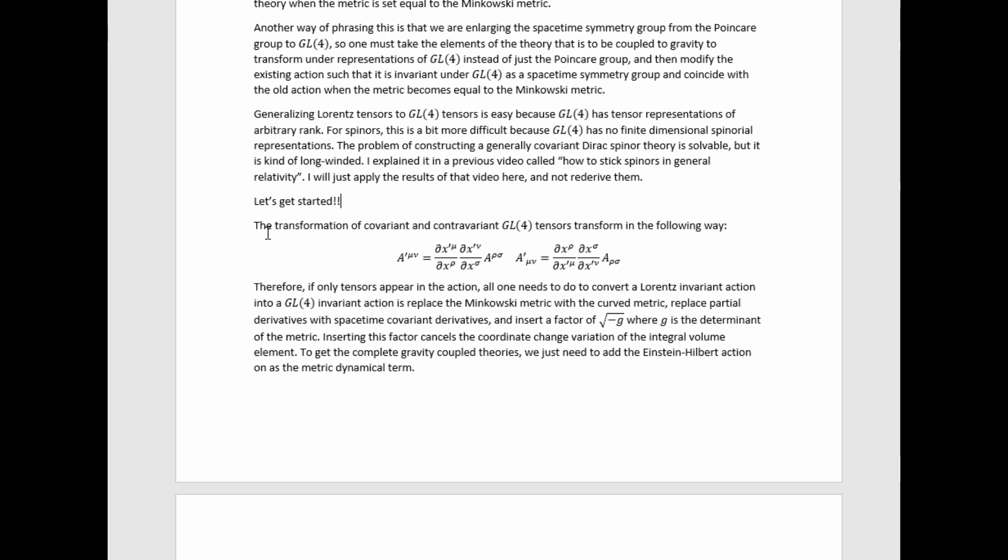So let's get started. The transformation properties of covariant and contravariant GL4 tensors are as follows, where these matrices are, of course, just Jacobians. These are the transformations, therefore, of these covariant and contravariant tensors under arbitrary coordinate transformation.